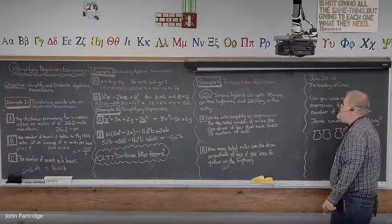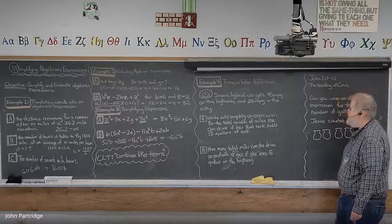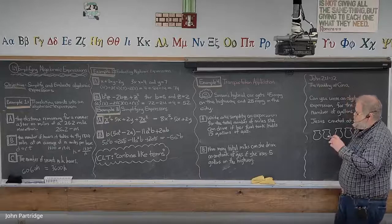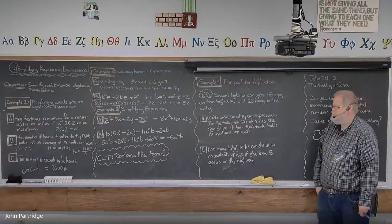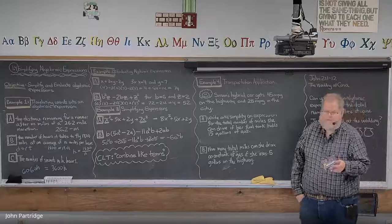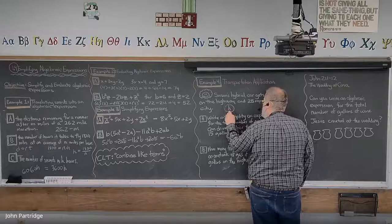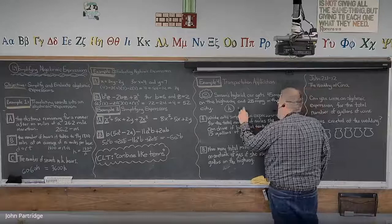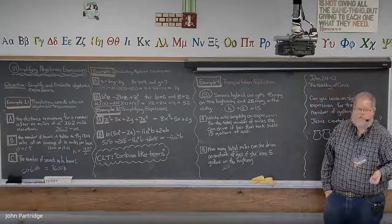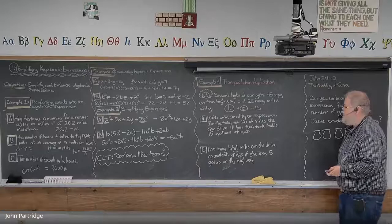Let's look at example four, transportation application. Susan's hybrid car gets 45 miles per gallon on the highway and 25 miles per gallon in the city. First part: write and simplify an expression for the total number of miles she can drive if her fuel tank holds 15 gallons of gas. I'm going to let H represent the gallons she uses on the highway, and C represent the gallons she uses in the city.